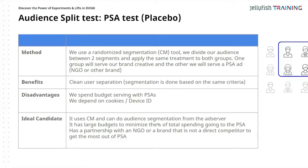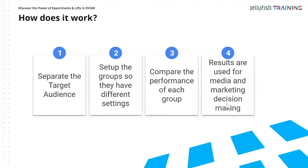This is what we usually call 'running a charity test' — maybe you've heard about it before. We separate the target audience, set up groups so that you have two different settings or the same targeting but something changes — in this case, the creative. You compare the performance of each group, and then the results are used for media or marketing decision making.